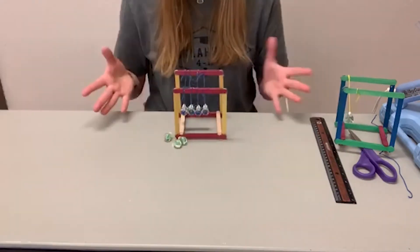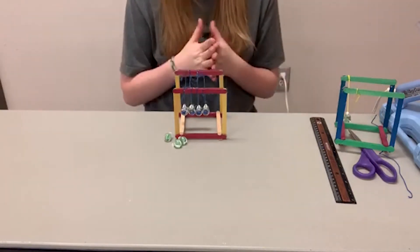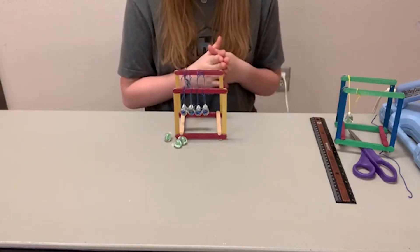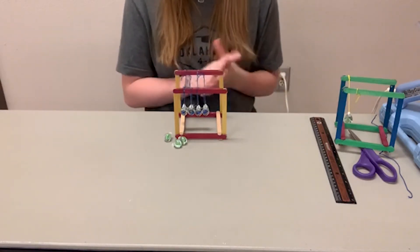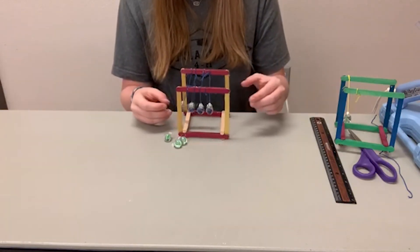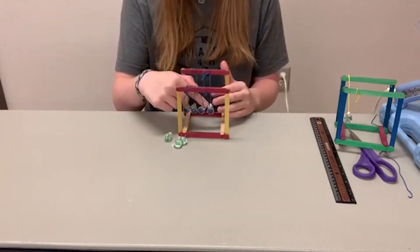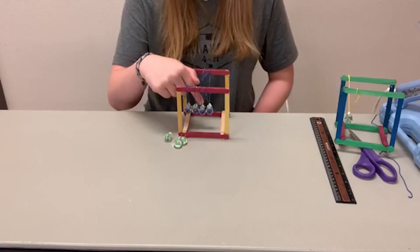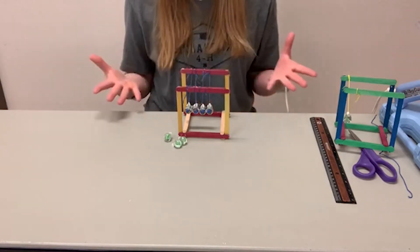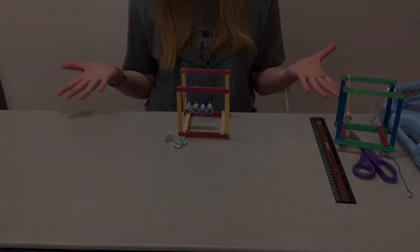This is called the principle of the conservation of momentum. Basically the momentum that one object has whenever it hits the other object is the exact same after the collision has occurred. So whenever this one hits that one it's transferred from the first one to the second one to the third one and to the fourth one whenever it comes out and that is basically the science behind a Newton's cradle.